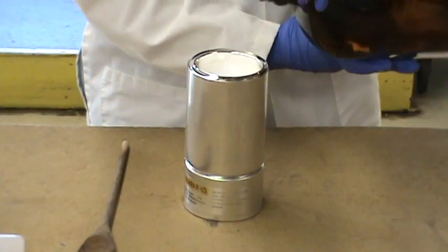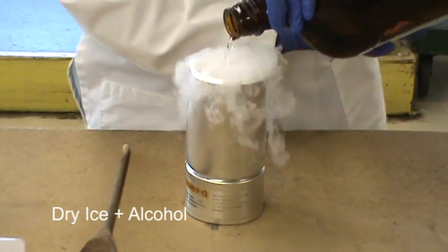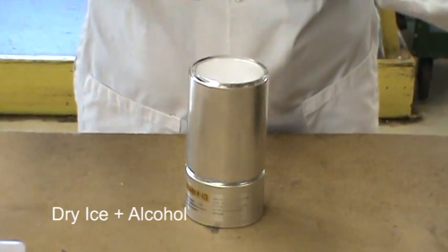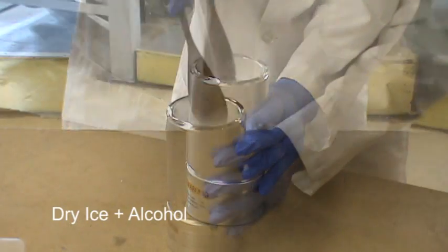First, prepare a solution of dry ice, also known as CO2, and alcohol. For one thermometer, you may need about a cup. If you do not have access to dry ice, you may also use a solution of shaved ice and salt.